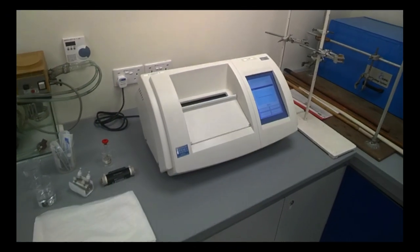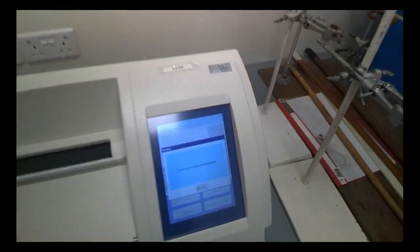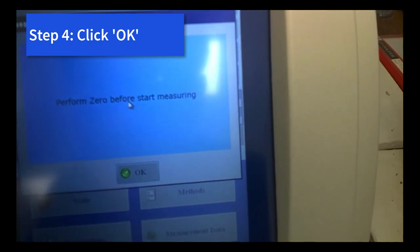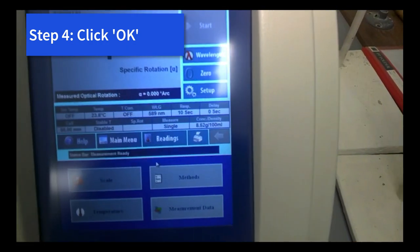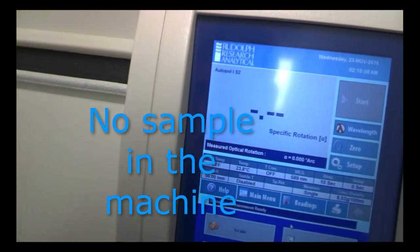Okay, so guys, now we are back. The machine has warmed up, we can start the experiment. So you see on the screen it says here that you've got to perform zero before measurements. We click OK, and see the panel here. The start button is now in gray, you can't click first because there's no sample inside the machine.